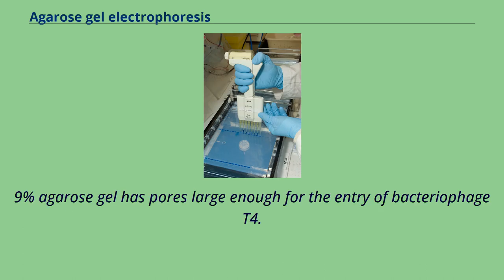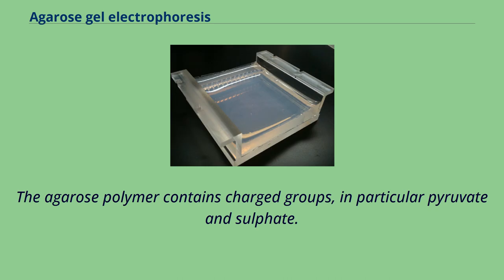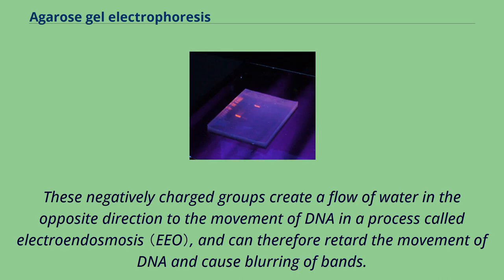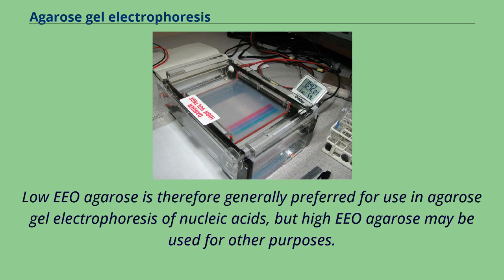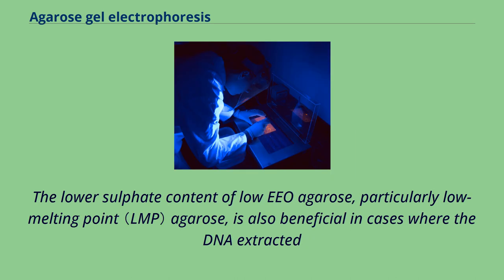A 0.9% agarose gel has pores large enough for the entry of bacteriophage T4. The agarose polymer contains charged groups, in particular pyruvate and sulfate. These negatively charged groups create a flow of water in the opposite direction to the movement of DNA in a process called electroendosmosis, which can retard DNA movement and cause blurring of bands. Higher concentration gels have higher electroendosmotic flow. Low EEO agarose is therefore generally preferred for agarose gel electrophoresis of nucleic acids, but high EEO agarose may be used for other purposes.